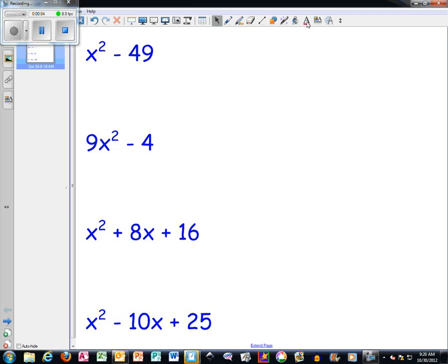Hello, this is a quick review about how to factor trinomials, like the two special cases. Our first special case is this first problem here, x squared minus 49. The first thing I want you to notice is that there is a minus sign, and that x squared is a perfect square, and 49 is a perfect square. So this right here would fall under our difference of perfect squares category.